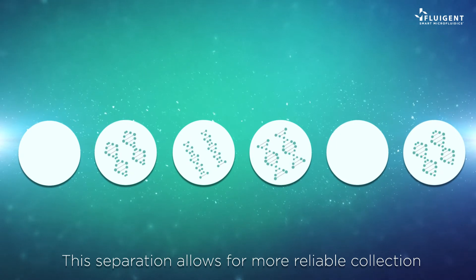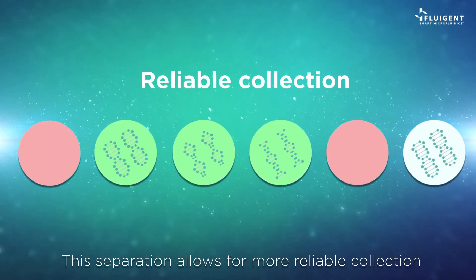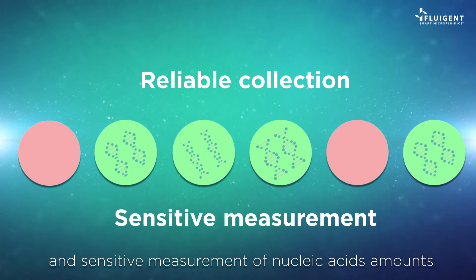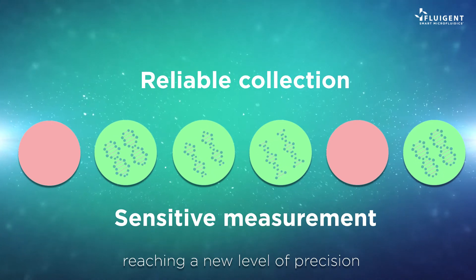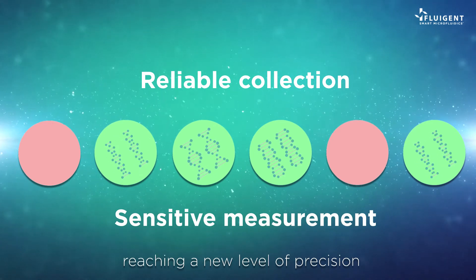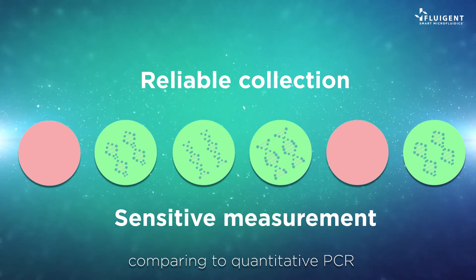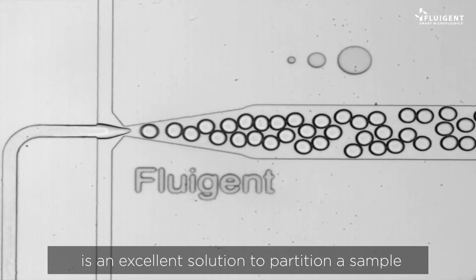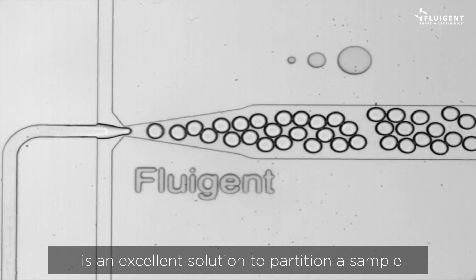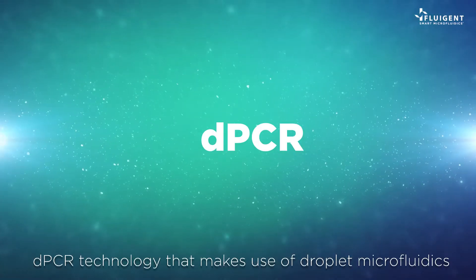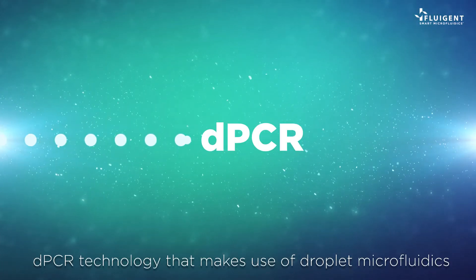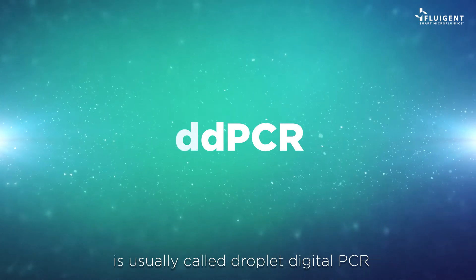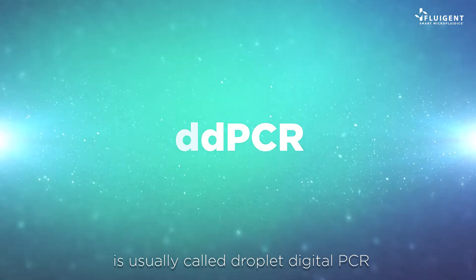This separation allows for more reliable collection and sensitive measurement of nucleic acid amounts, reaching a new level of precision compared to quantitative PCR. Droplet-based microfluidics is an excellent solution to partition a sample, and dPCR technology that makes use of droplet microfluidics is usually called droplet digital PCR.